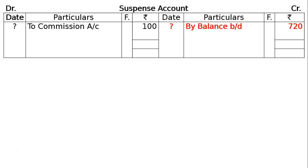First, suspense account is debited to commission account ₹100 — write this on the debit side of the suspense account. Second, suspense account is debited to personal account ₹660 — post this into the suspense account on the debit side. Now the suspense account is closed. Total both sides: it is ₹720 and ₹720. The suspense account balances and this is the final answer.